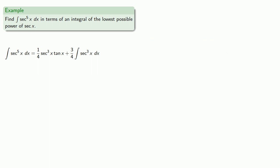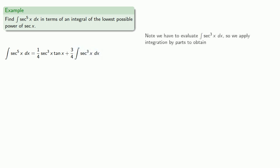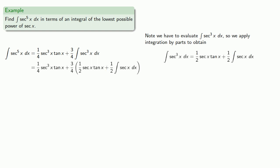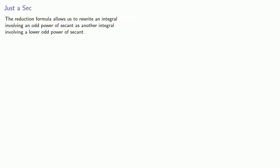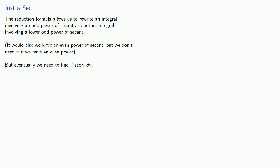But wait, there's more. There's this integral of secant cubed x. Since we didn't waste our time with the reduction formula, we'll apply integration by parts to obtain the result. And so we've rewritten the integral of secant to the fifth in terms of the lowest possible power of an integral of secant. The reduction formula allows us to rewrite an integral involving an odd power of secant as another integral involving a lower odd power of secant. It would also work for an even power of secant, but we don't need it if we have an even power. But eventually we need to find the integral of secant x dx — and we'll take a look at that next.